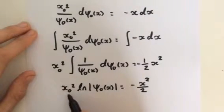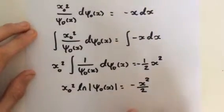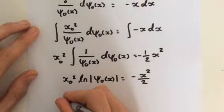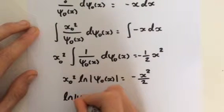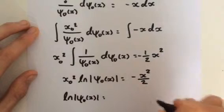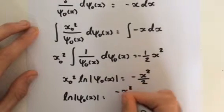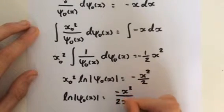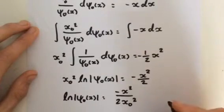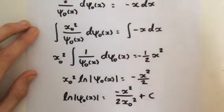So divide both sides by x_0 squared. And we therefore get the natural log of our wave function is equal to negative x squared divided by 2 x_0 squared. And we add the constant of integration.